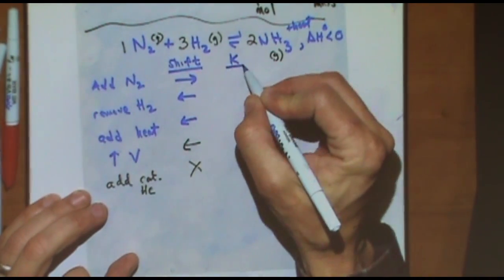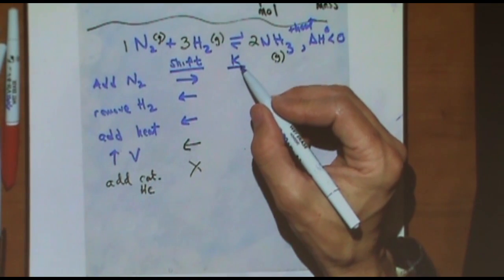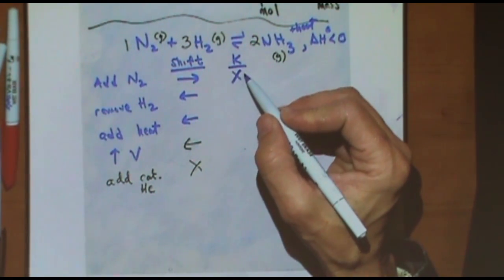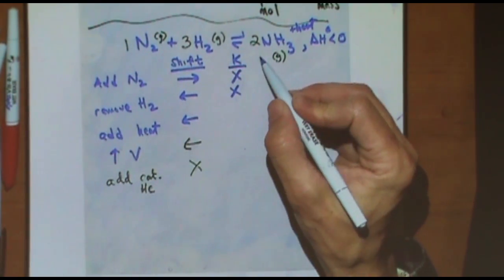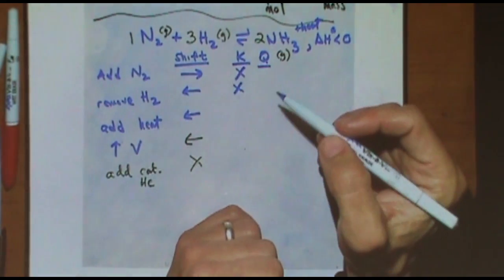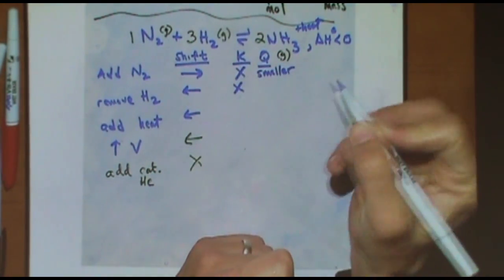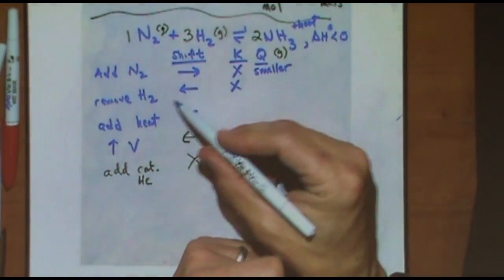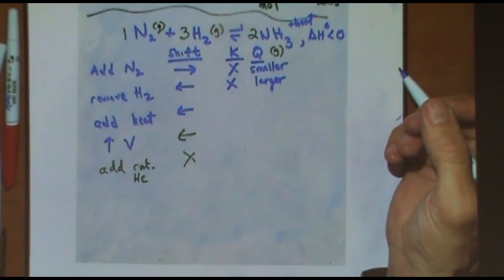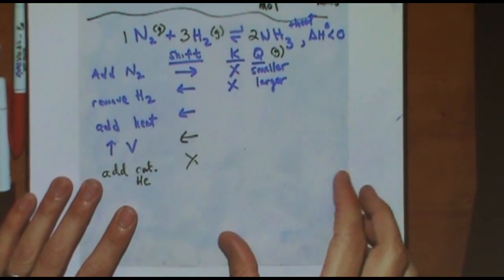Okay. Let's add another column here. The first one, it's not going to be a real column because I'm only going to do this for one of them. How does K change if I add N2? No shift because it's a constant. That's a constant. So those aren't going to shift it. How about Q? If I add N2, is Q going to get larger or smaller? It'll become smaller and then eventually there'll be a shift. If I remove H2, it'll get larger.